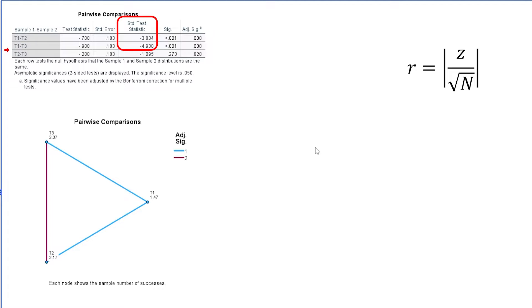T1 and T2 show a standardized test statistic Z of minus 3.834, and T1 and T3 show a Z-value of minus 4.93. Both will be divided by the square root of 60. I can either do that in Excel, Google Sheets, or use the calculator.